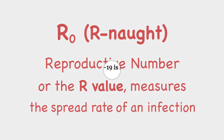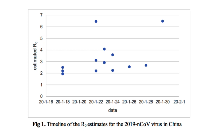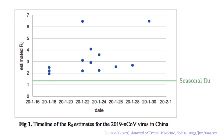Oxford University Press just published a study that reviews 14 studies estimating the R-value of the Wuhan virus. This graph shows the estimated R-values from the studies reviewed. The green line shows the mean R-value of the seasonal flu, and the pink-colored line shows the mean R-value of the Spanish flu of 1918, with its range in the toned region.